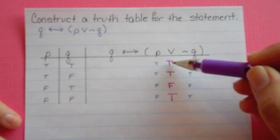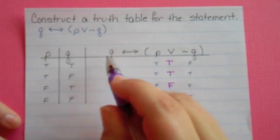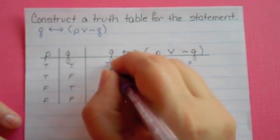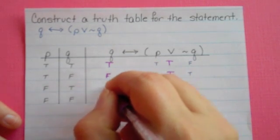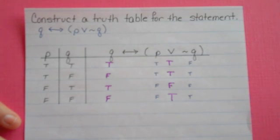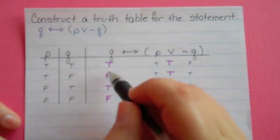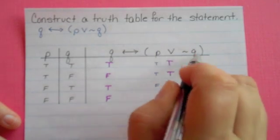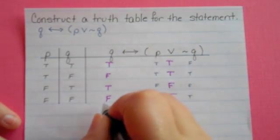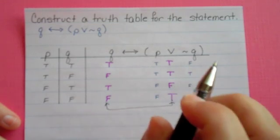Now I'm going to use that result with Q over here. We've got plain old Q, which is true, false, true, false. Now for the biconditional, which is my last step, I need to take the column under Q and my solution column from the parentheses. My if-and-only-if is going to be between these two columns.